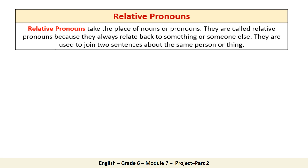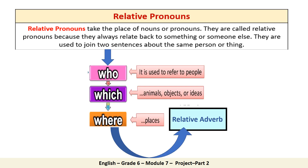Relative pronouns take the place of nouns or pronouns. They are called so because they always relate back to something or someone else. They are used to join two sentences about the same person or thing, such as who, which, and where.